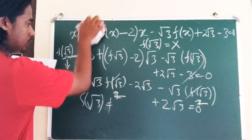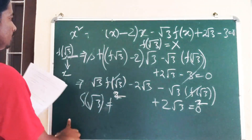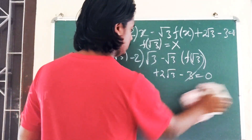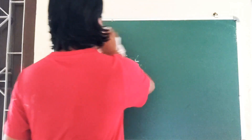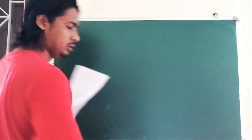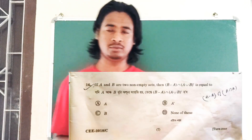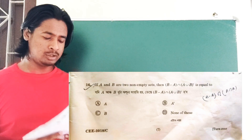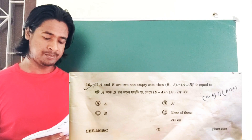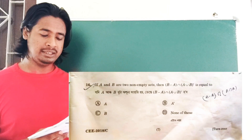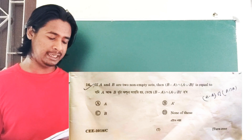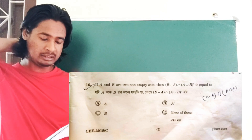Next is question number 16. If A and B are two non-empty sets, then B difference A intersection A union B complement equals what? The options are: A complement, B, none of these.